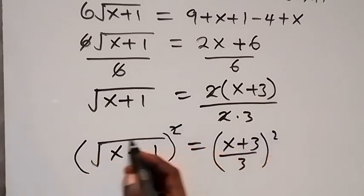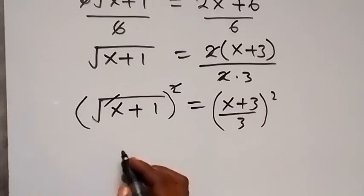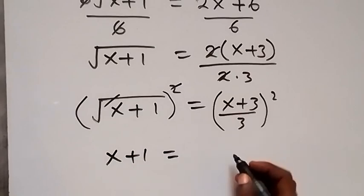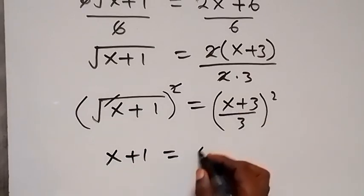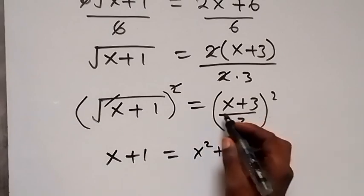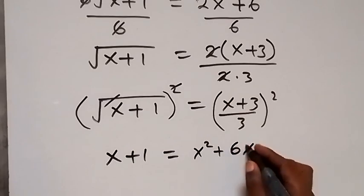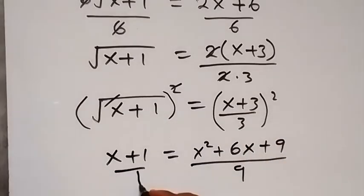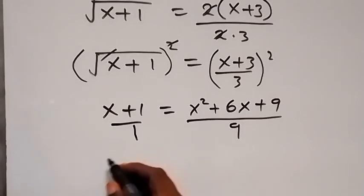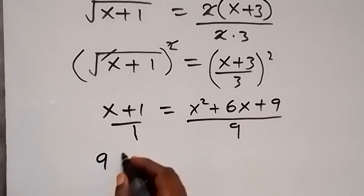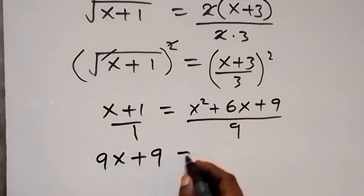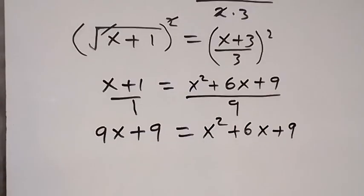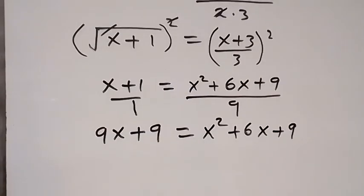Now let's square both sides again. The square cancels the square root on the left, giving x plus 1. On the right, we square the numerator and denominator: (x plus 3) squared over 9, which expands to x squared plus 6x plus 9 over 9. Cross multiplying gives 9x plus 9 equals x squared plus 6x plus 9.